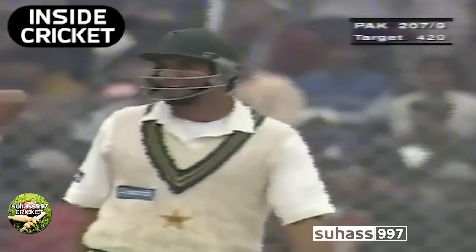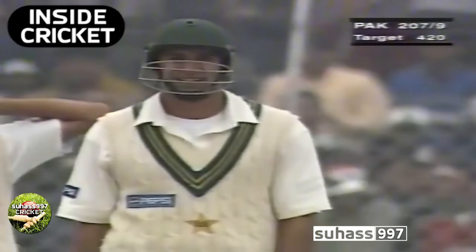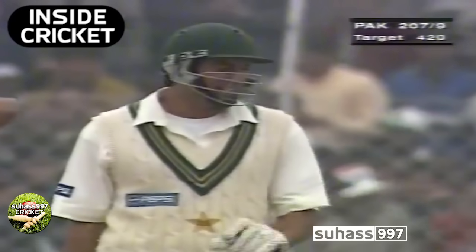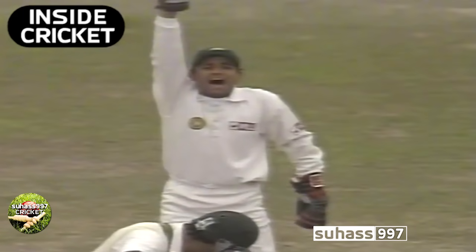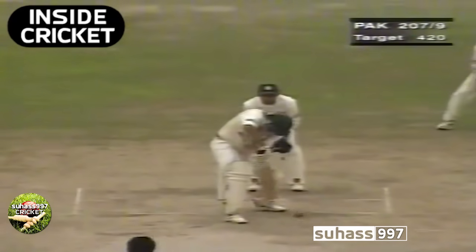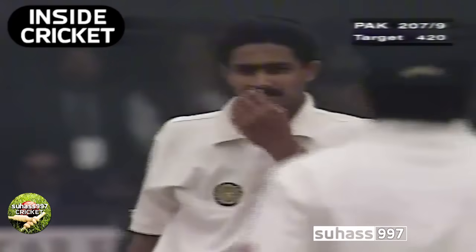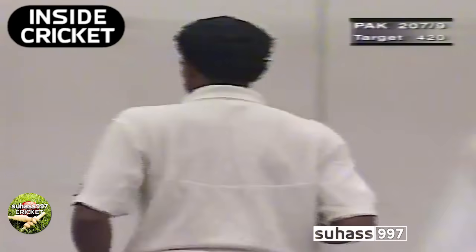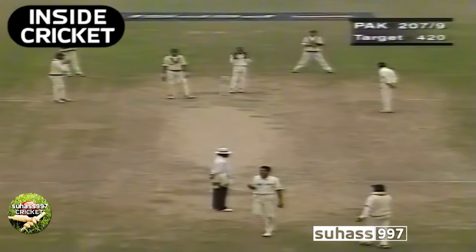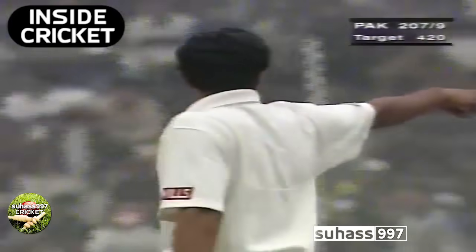Wasim Akram just playing down the wrong line and having a smile there. Well, the hat-trick is out of the question now. Still a very good opportunity to get 10 wickets though. Although Nayan Munga was trying his best. That one turned and kept low. Sachin having a word with Anil Kumble.